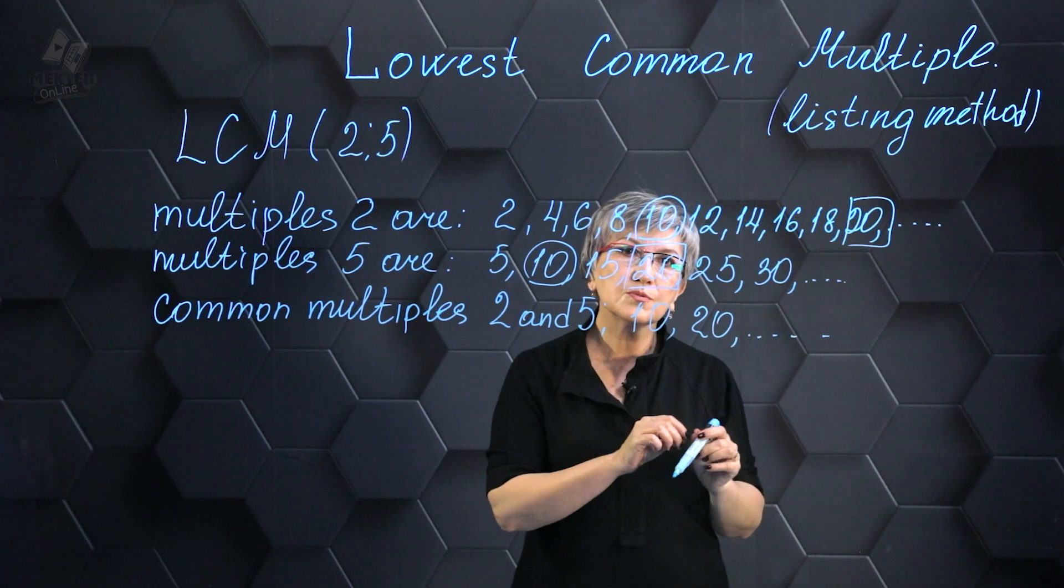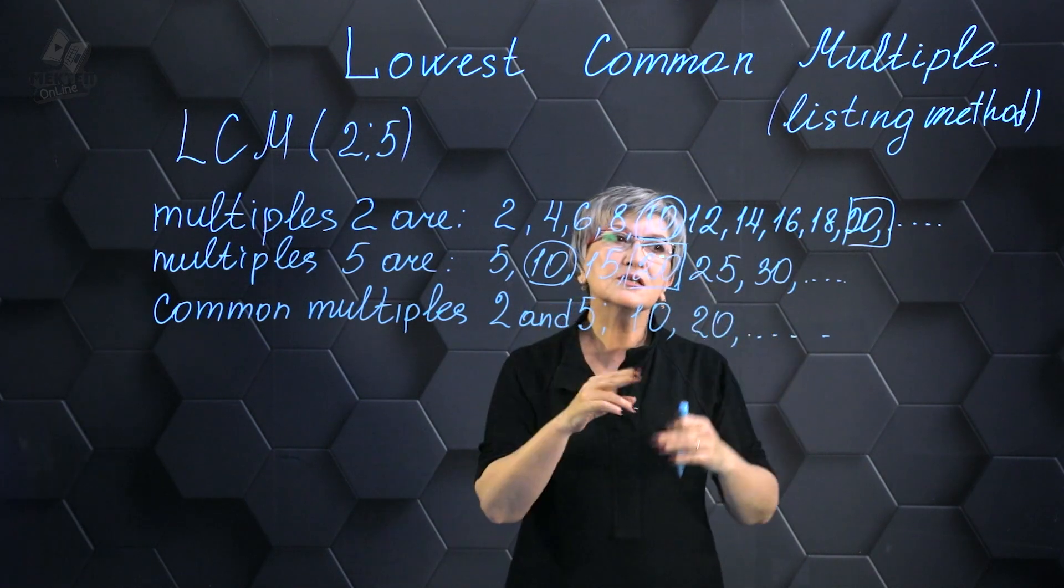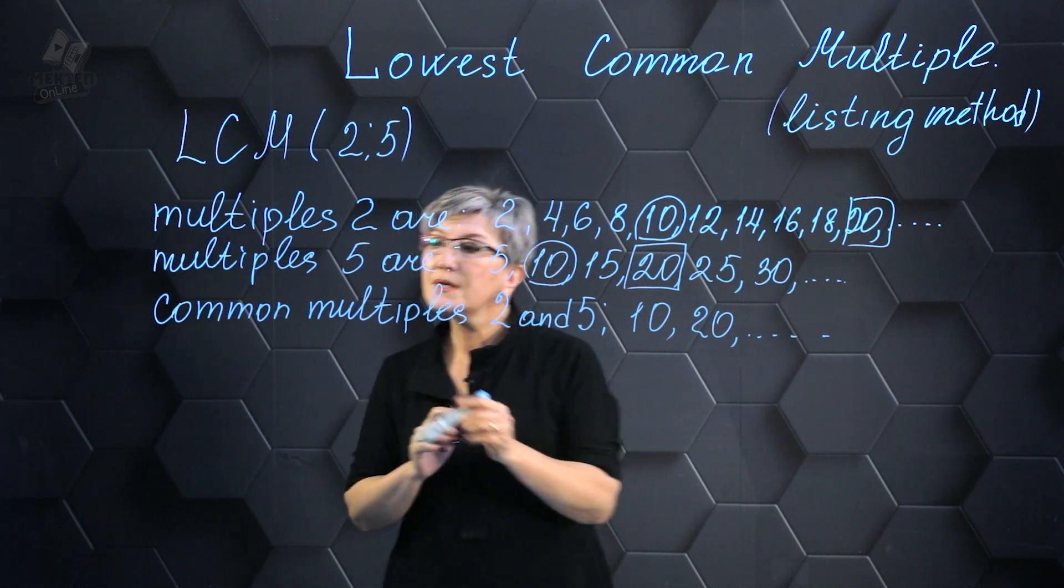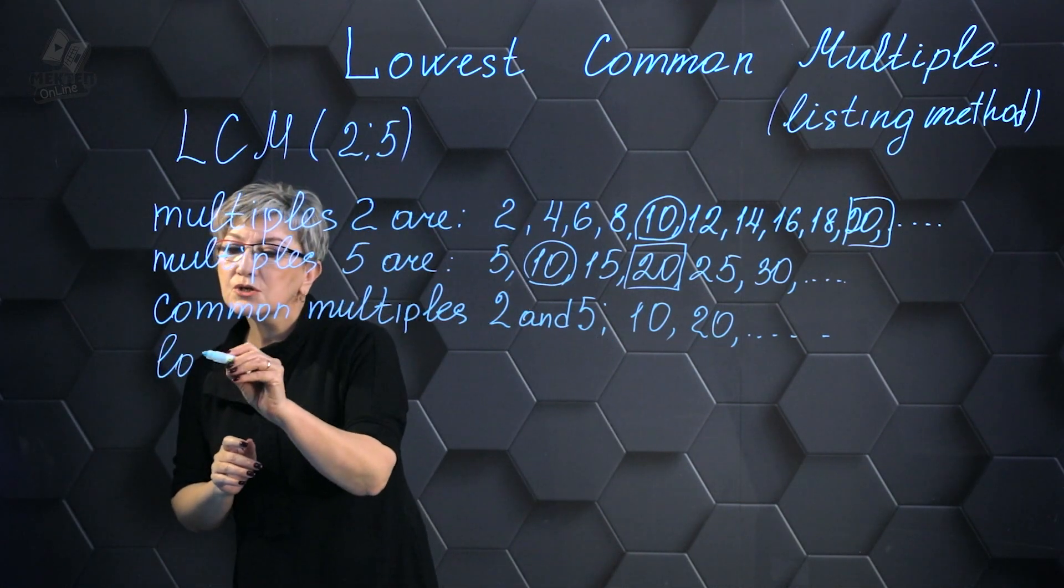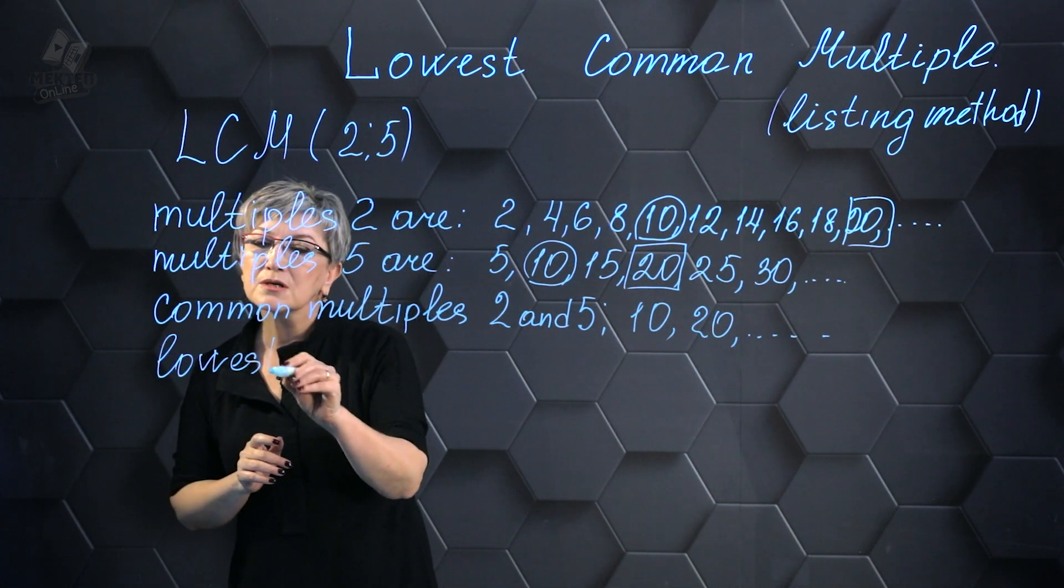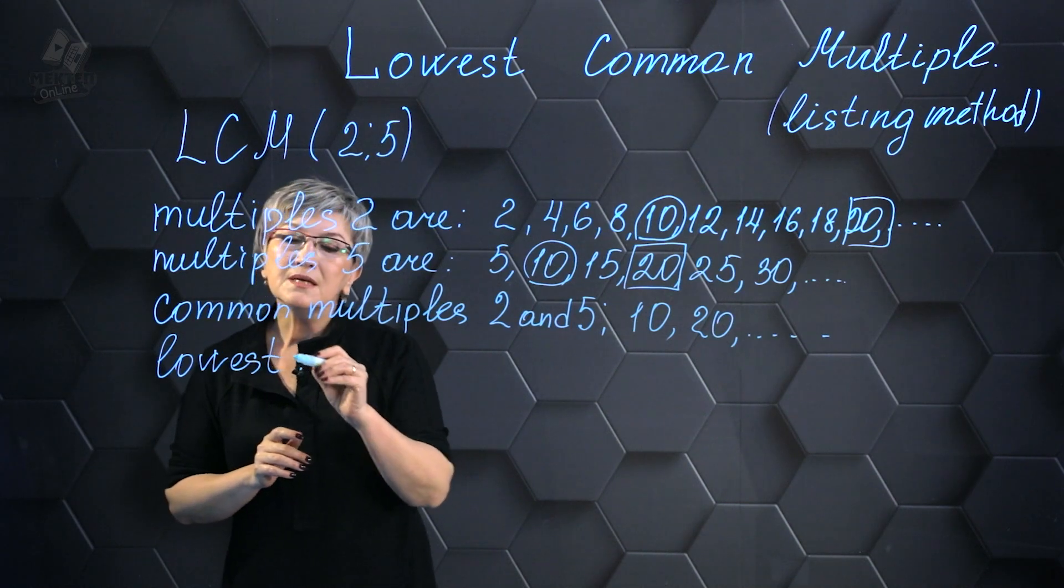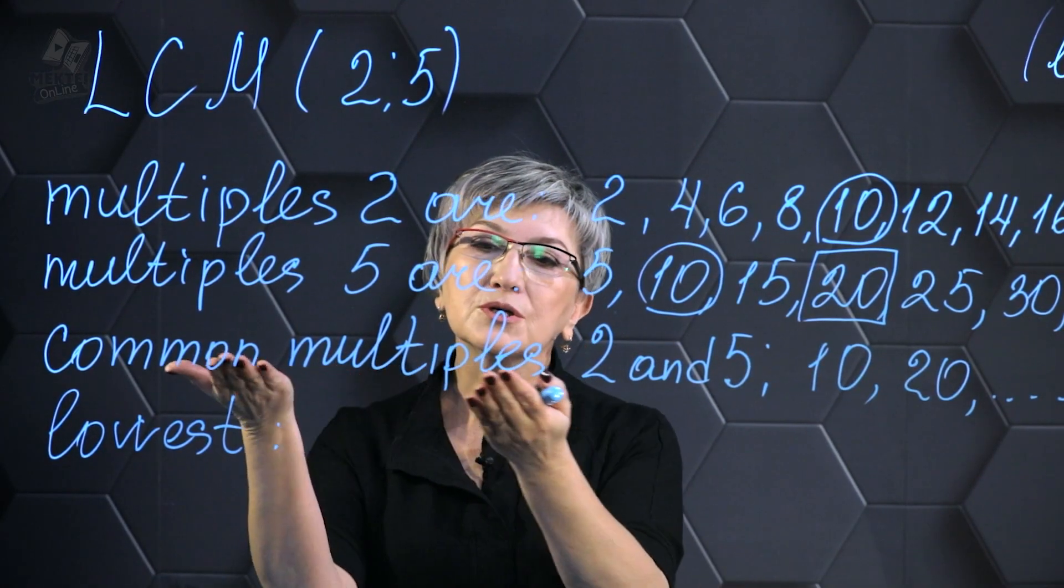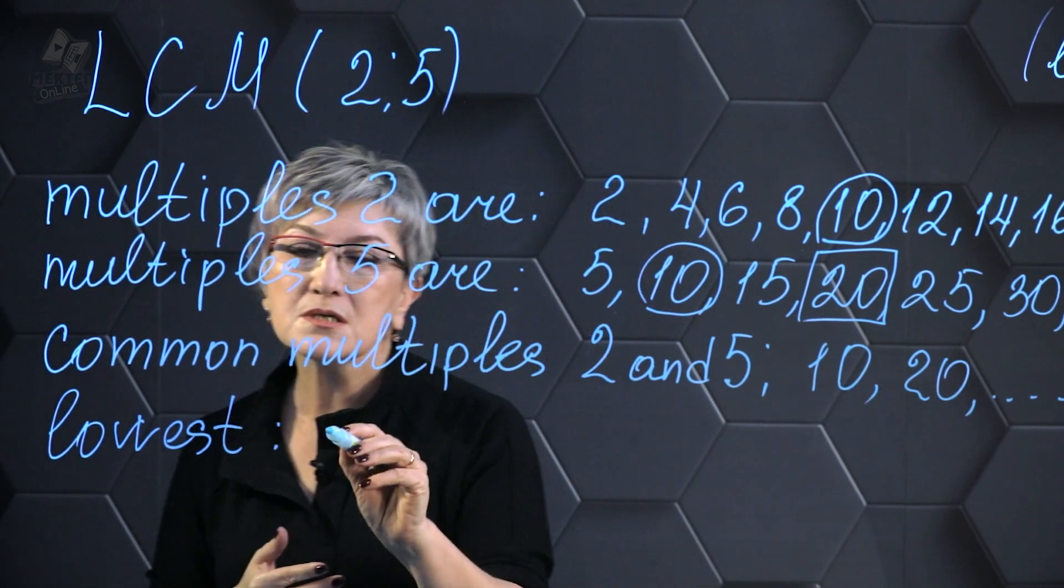At this particular moment we are in need of finding the least common multiple. I see that if I choose the smallest number from the common multiples, it will be 10. That's it.